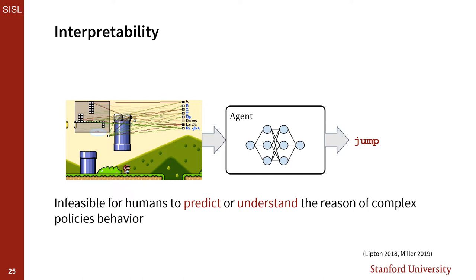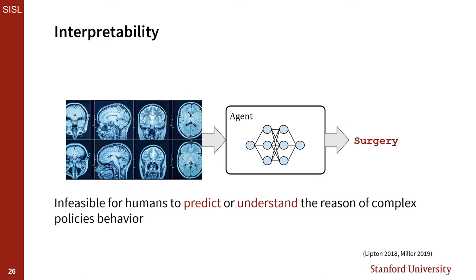Another challenge when using complex decision-making methods is interpretability. We're using a neural network agent to play a video game. Even simple neural networks may have large sets of interacting parameters dictating behavior, and it's infeasible for humans to meaningfully interpret this many complex interacting parameters. In many situations, it's impossible to predict what a neural network might do in response to a given input or to explain why it took a particular action. That might be acceptable in low-consequence tasks like video games, but to apply neural networks to high-consequence tasks like medical diagnosis, more interpretable methods and more trust built into these systems by design are needed.